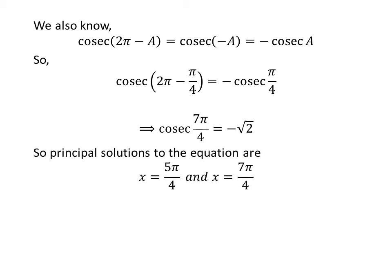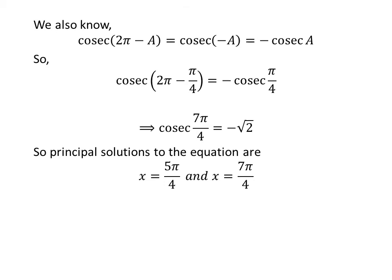So, the principal solutions to the equation cosecant of x is equal to minus √2 are 5π/4 and 7π/4.